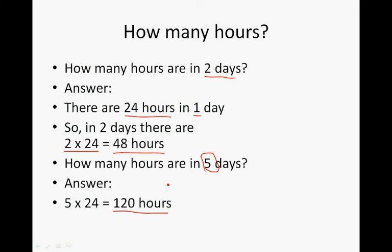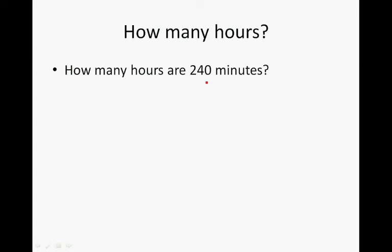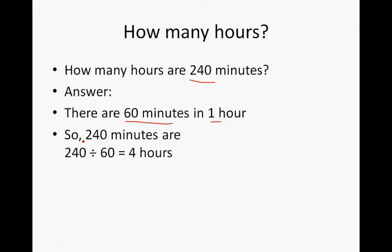To go from days to hours, we multiply the number of days by 24 to get the number of hours. How many hours are in 240 minutes? In one hour there are 60 minutes, so to go from minutes to hours we divide by 60. So 240 divided by 60 equals 4 hours — 240 minutes is equal to 4 hours.